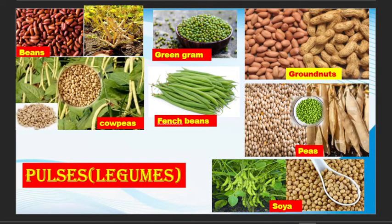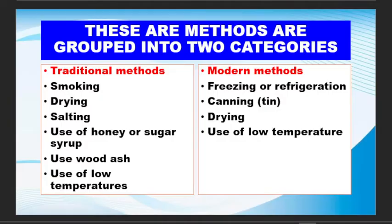Let's look at the pulses. We have beans, green gram, French beans, groundnuts, peas, and soya beans.